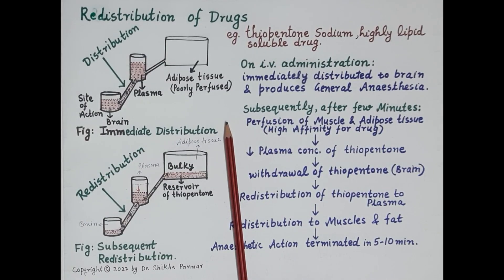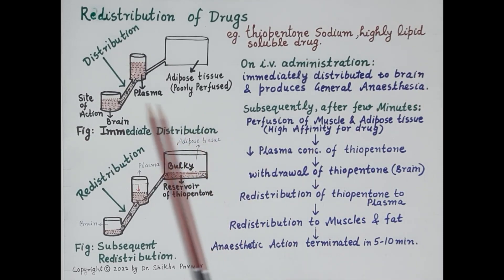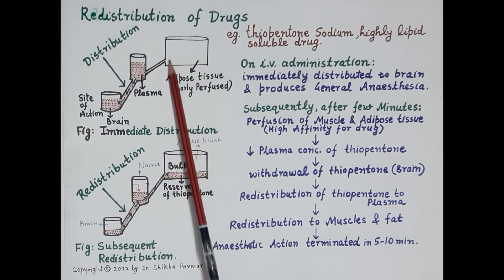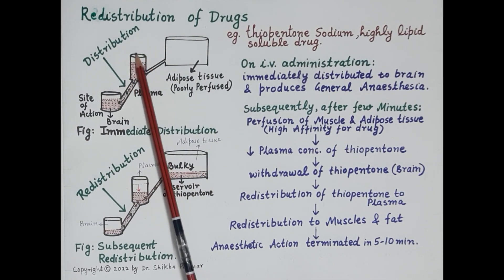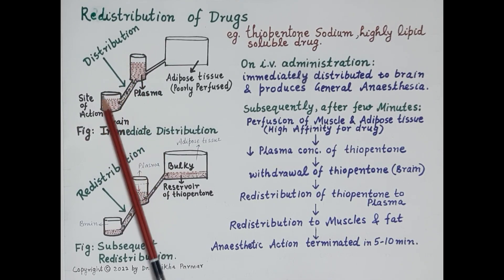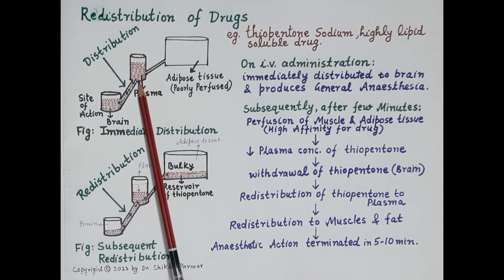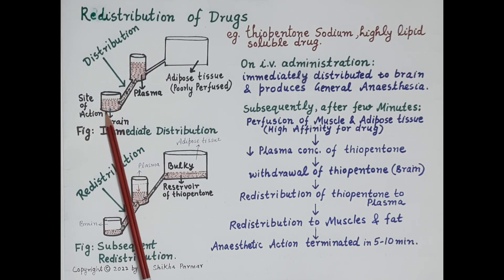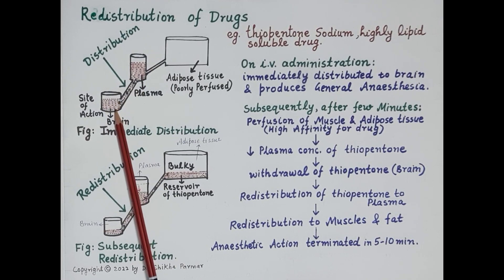Now let's understand the phenomenon of redistribution with the help of figures. Our drug is thiopentone sodium, which is a highly lipid-soluble general anesthetic whose site of action is the brain. This figure shows three boxes: this entire large box represents the adipose tissue, which is a bulky and poorly perfused tissue. This box represents the systemic circulation — the blood plasma — and this box represents the brain. The concentration of drug in the plasma is shown in red, and the concentration of thiopentone sodium in the brain is also shown in red.